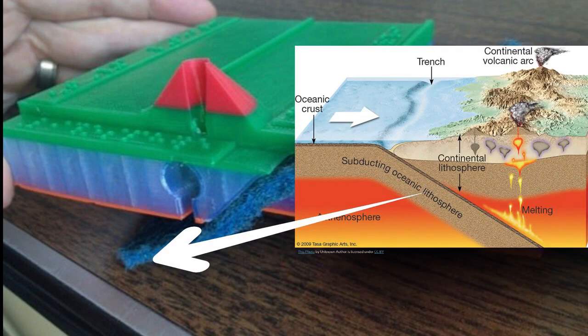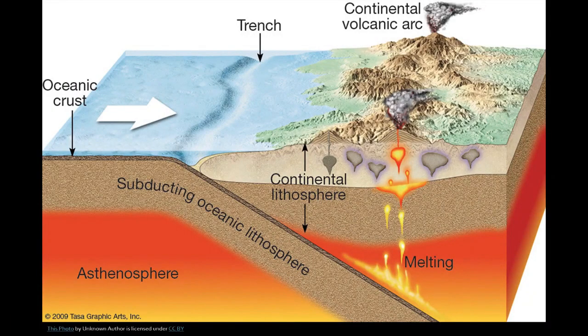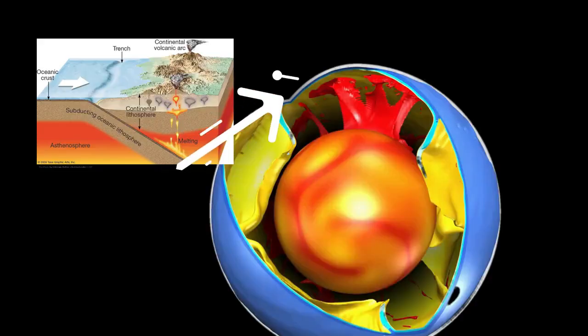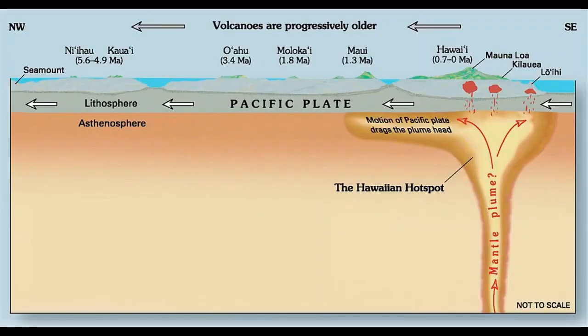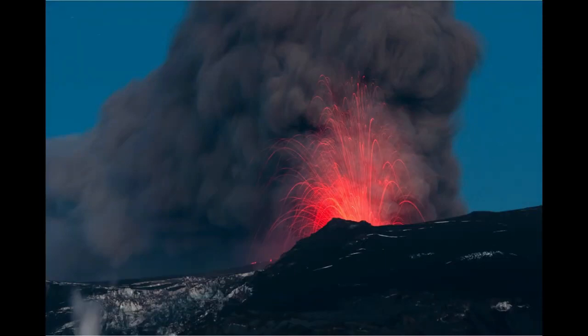As the leading plate goes deeper into the mantle it melts and becomes magma. Due to the high temperature in the mantle, the magma builds up a pressure that enables it to push the ground above it. The column of rising magma is called a mantle plume.